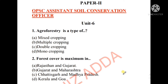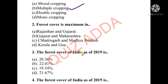Question number one: Agroforestry is a type of — the options are mixed cropping, multiple cropping, double cropping, or monocropping. The right answer is option B, that is multiple cropping. Question number two: Forest cover is maximum in which state? The options are Rajasthan and Gujarat, Gujarat and Maharashtra...